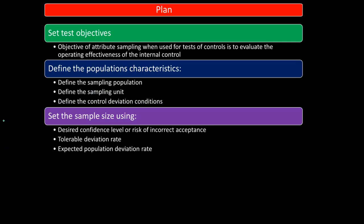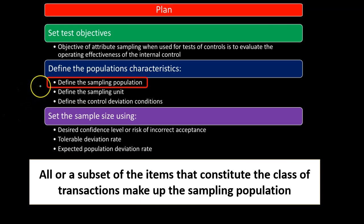Starting with defining the sampling population: the sampling population is all, or a subset, of the items that constitute the class of transactions. The sampling population is the entire population. For example, if we're testing an internal control related to the purchasing process — some type of verification within that process — the population size would be all of the documents that should have an indication that they have been properly verified in accordance with the internal control.